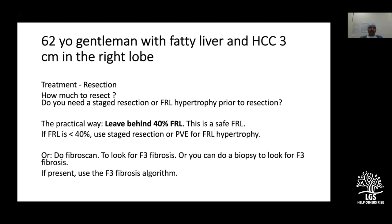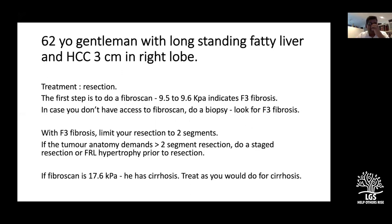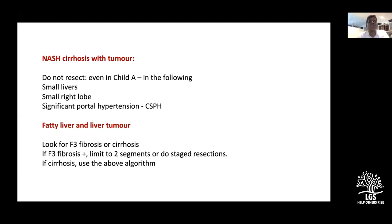For fatty liver, 40 percent future remnant is ideal. Even in cirrhotics, about 40 percent is left if their function is good enough for resection. One panelist shares experience: after complications from major resections in cirrhosis, the preference is to limit to less than two segments in cirrhotic livers. For NASH cirrhosis: confirm fibrosis by fibroscan or biopsy, limit to two segments or do staged resections. Avoid resections in small livers, small right lobes, or patients with significant portal hypertension.